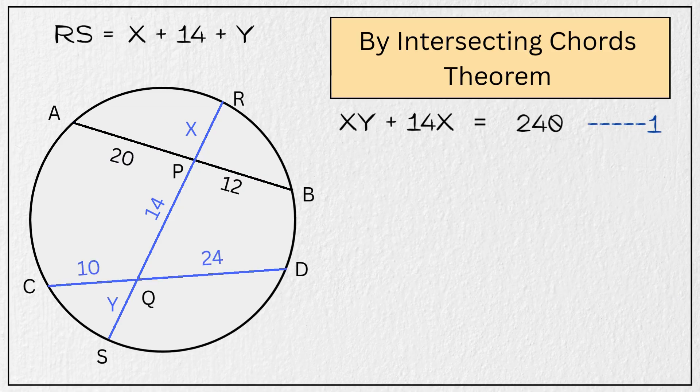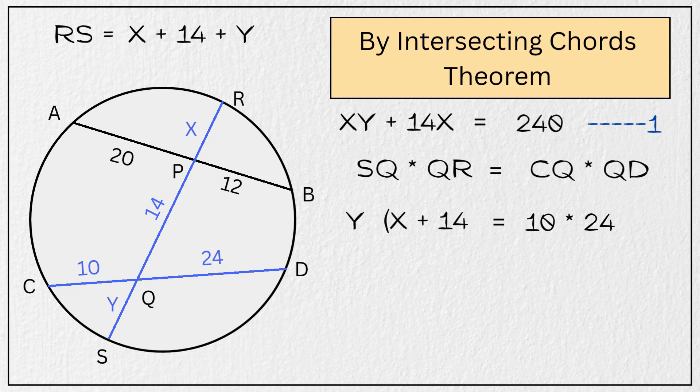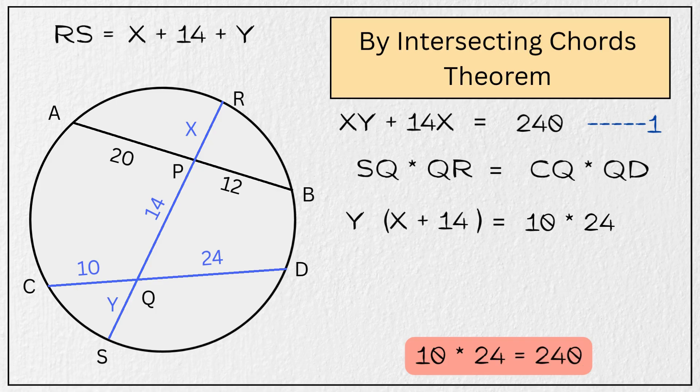Now let's apply the same theorem to chord CD and chord RS, which intersect each other at Q. So according to this theorem we get SQ multiplied by QR is equal to CQ multiplied by QD. So substituting the values, we get 10 multiplied by 24 equals Y multiplied by the quantity X plus 14. 10 times 24 is again 240.